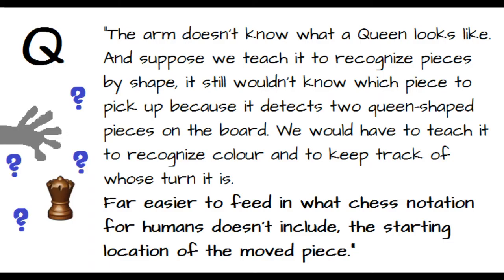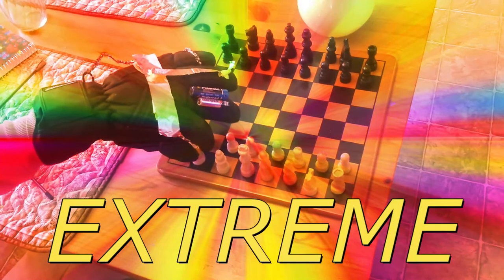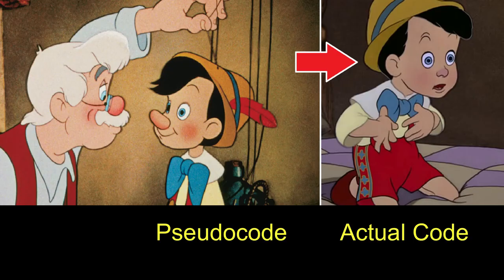One of the moves in the Immortal Game is written QXA1 plus sign, meaning the queen captures the piece on A1 resulting in a check. That is both too much and too little information for our robot arm. Let's go through it bit by bit. Q. The arm doesn't know what a queen looks like, and suppose we teach it to recognize pieces by shape. It still wouldn't know which piece to pick up because it detects two queen-shaped pieces on the board. We would have to teach it to recognize color and to keep track of whose turn it is.